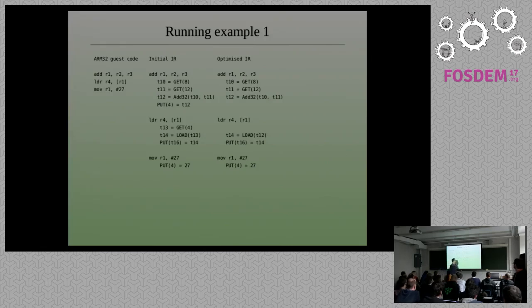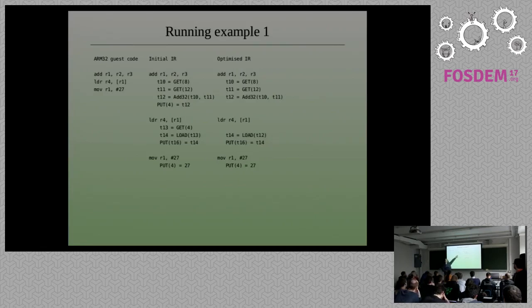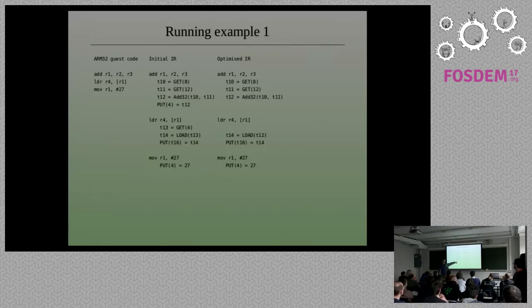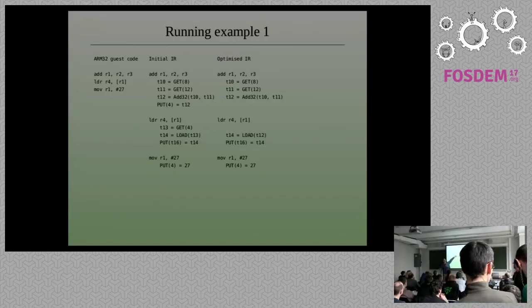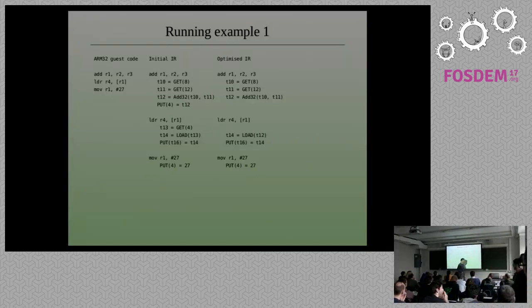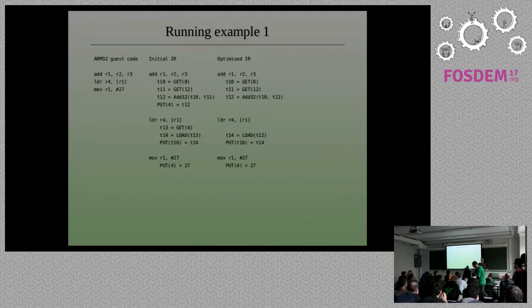This is then put through the IR optimizer, which does a whole bunch of things. One of the most important is it chains the gets and puts together. It will take a fetch and observe that the value is actually written further up, so it hooks them up directly. We also observe that we're overwriting the same offset in the guest state — so one of the puts is actually redundant and can be removed. This shows how we optimize away artifacts in the original IR.